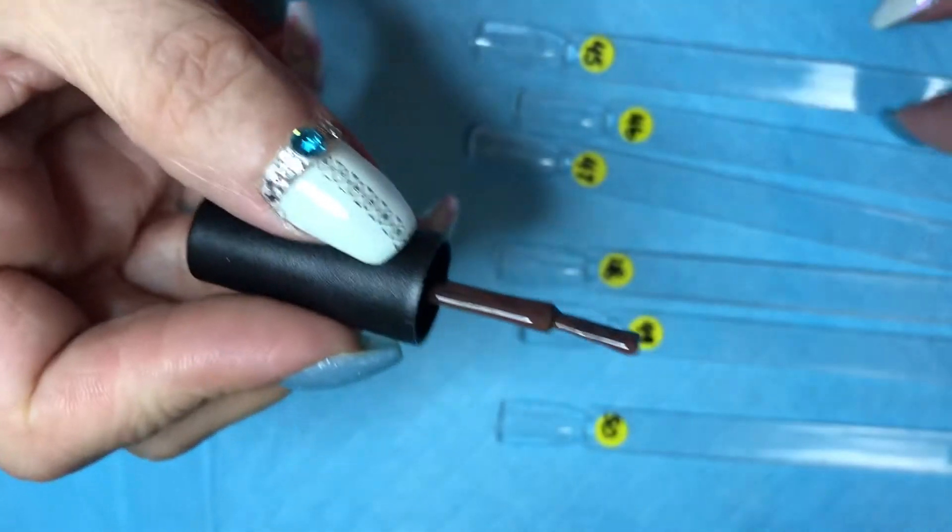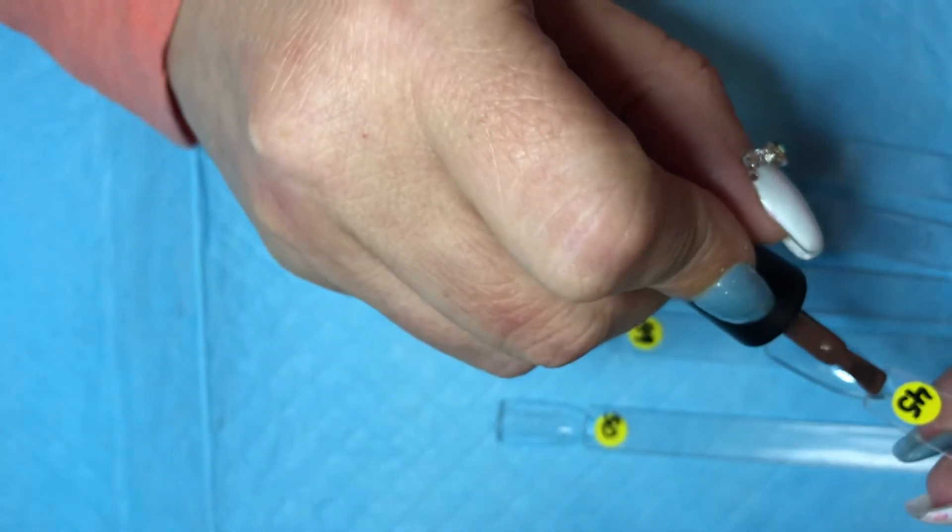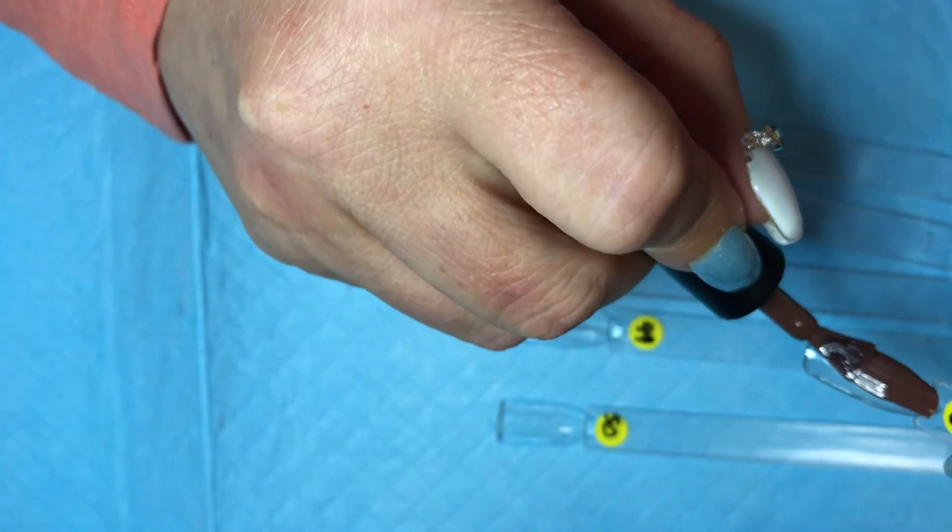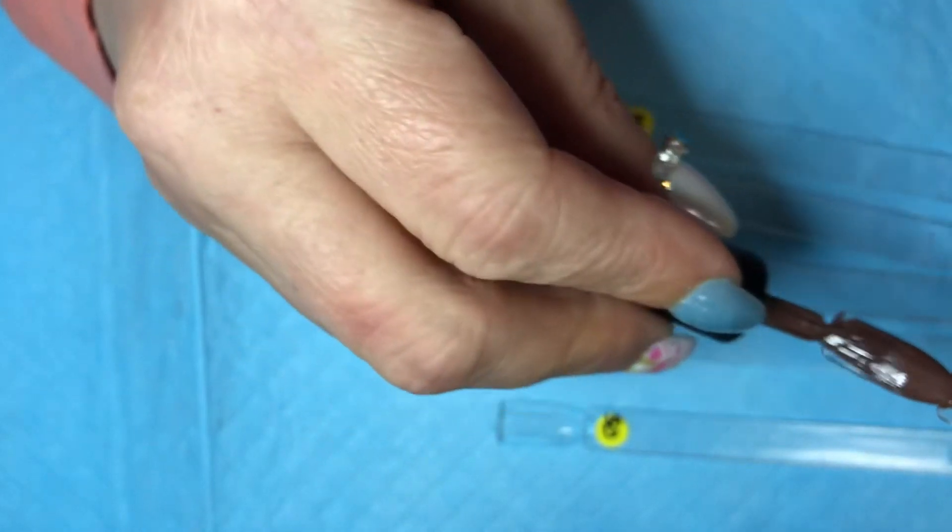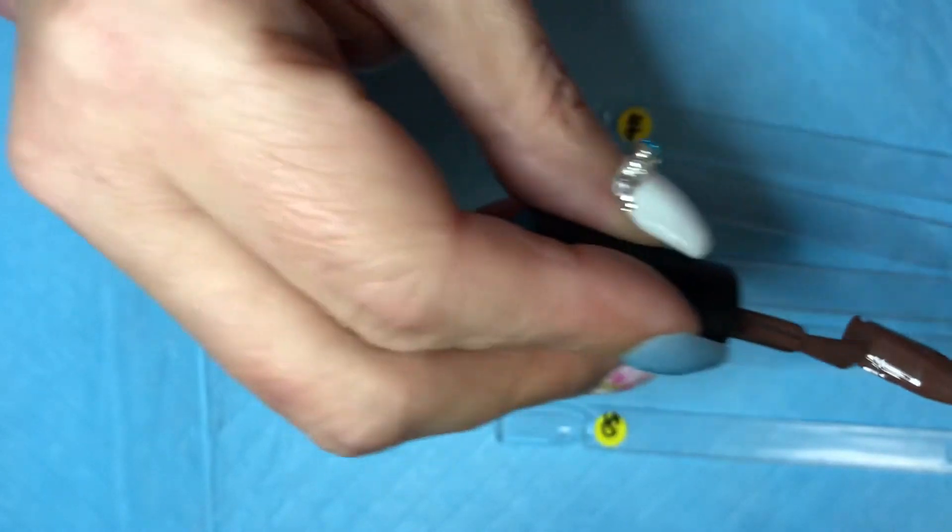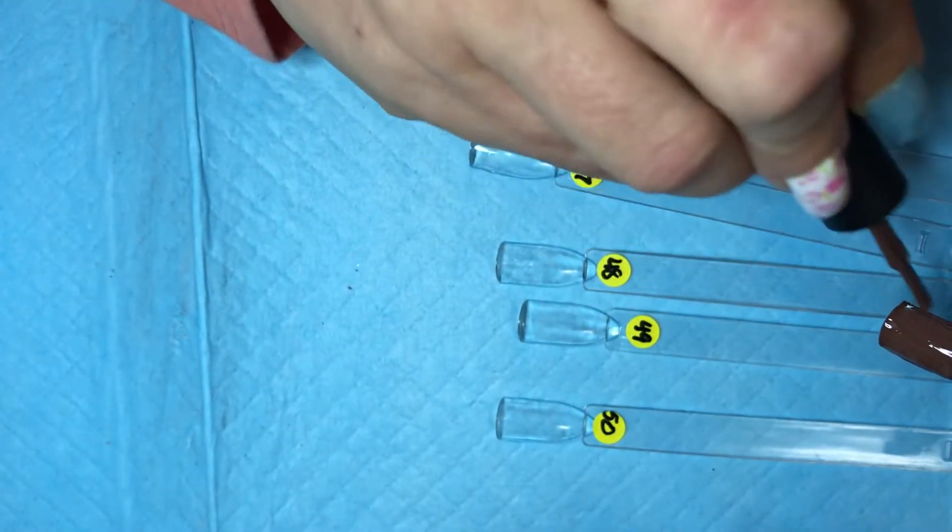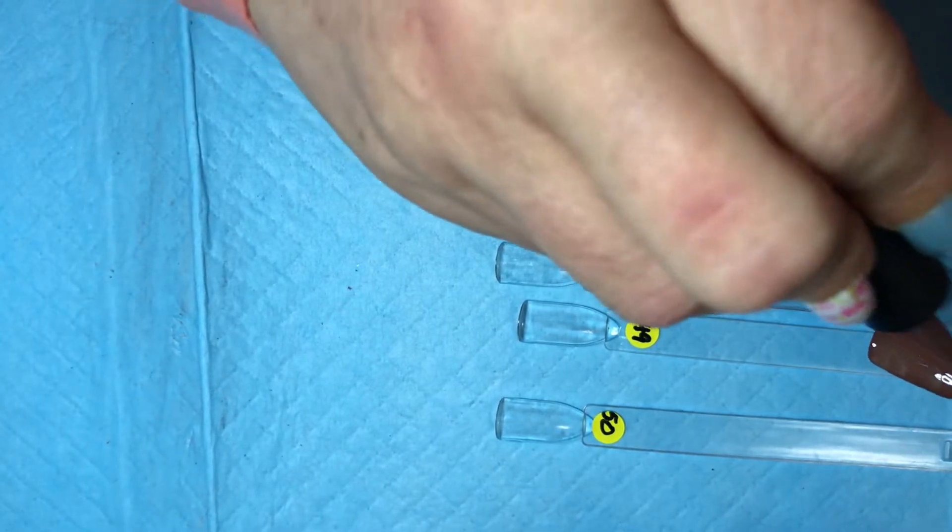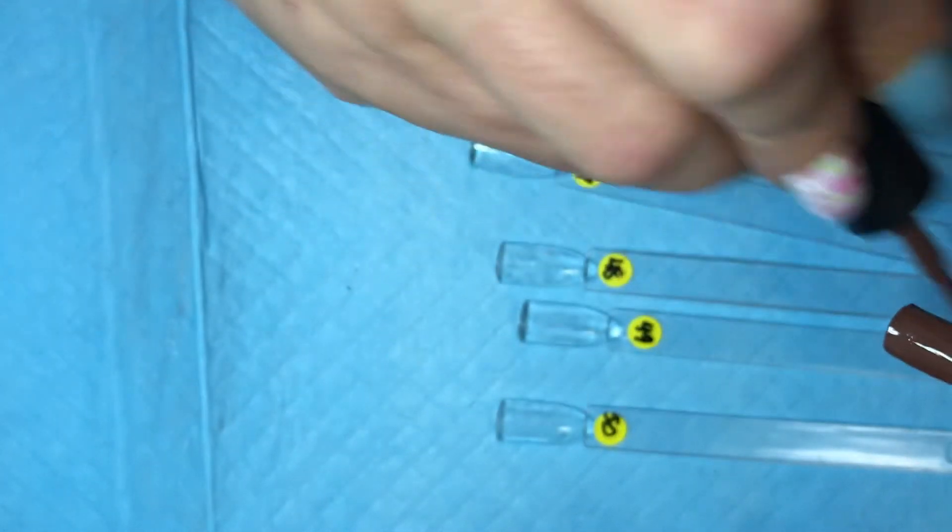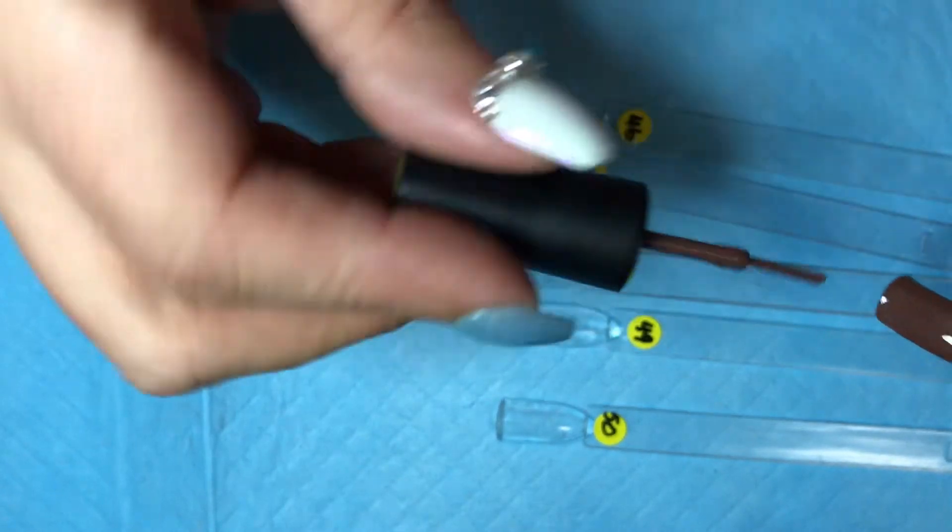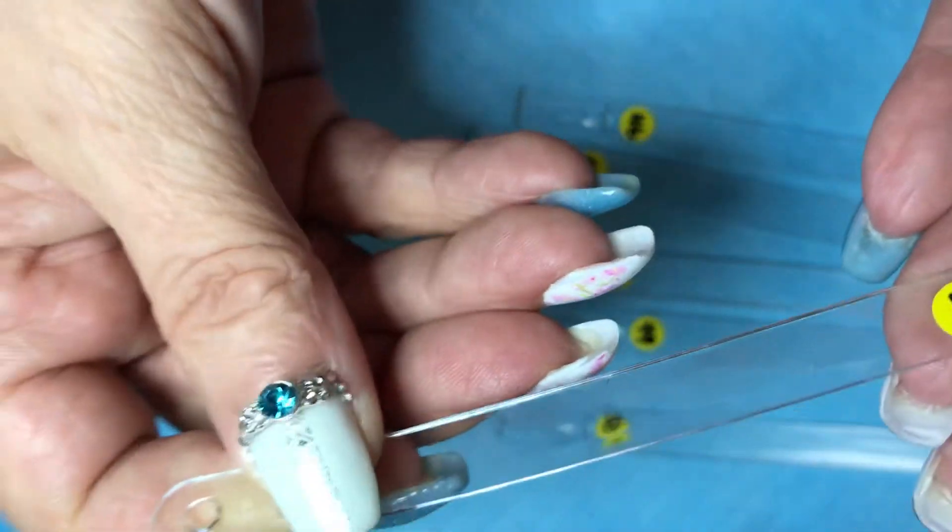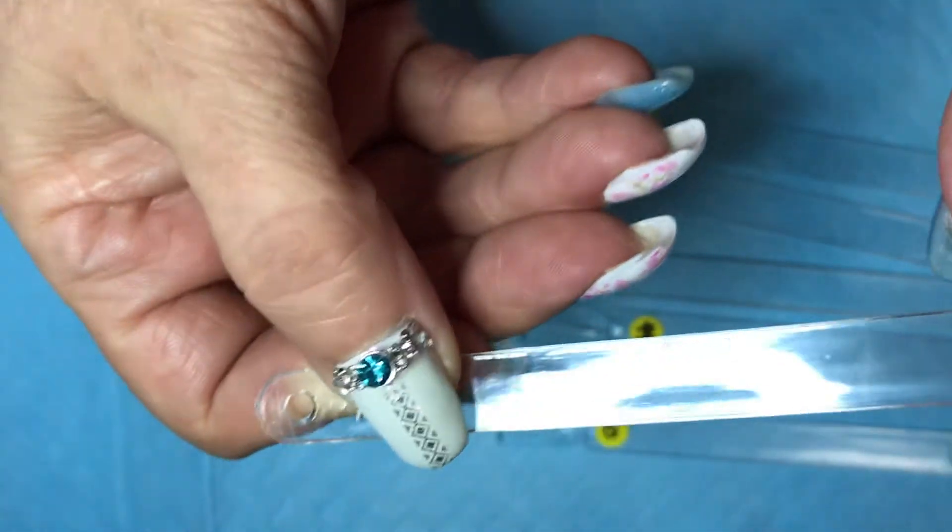So number 45 is this beautiful chocolatey brown. Let's see how it applies. It's from - I can't pronounce them like I said before, I'm just gonna call it Mitzi because I don't know how to pronounce that word. It's definitely not a one-coater, but it does apply fairly nicely. Self-levels, actually I really like it.